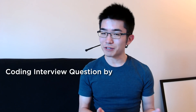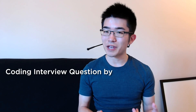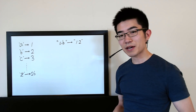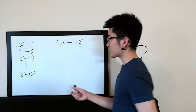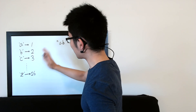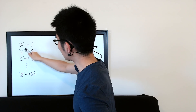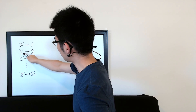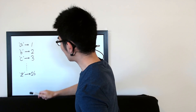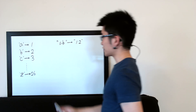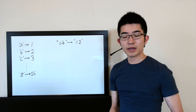Hey everyone, today I have a coding interview question that's being asked by Facebook. In this problem you're given a mapping like this one: the letter A maps to 1, B maps to 2, and so on up to Z which maps to 26.